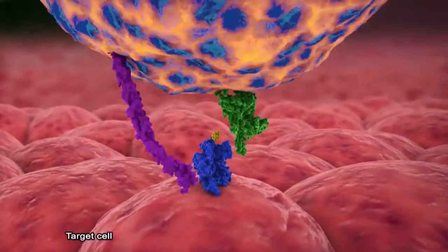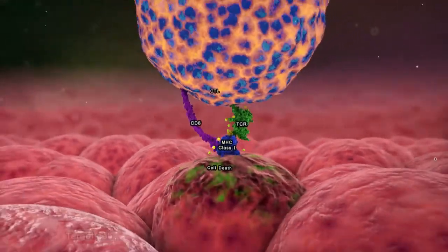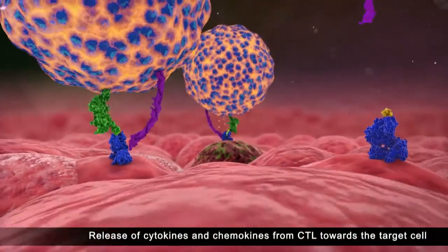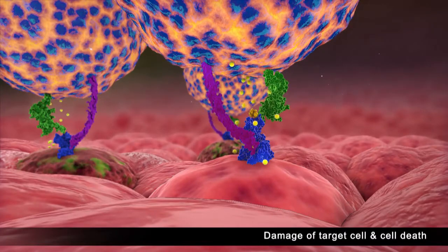Activated CTLs proliferate and directly kill target cells having the same MHC peptide complexes. This action is accomplished by releasing cytokines and chemokines.